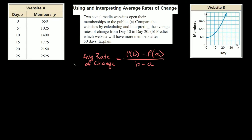What's up, you freaking geniuses? In this video I'm going to teach you how to compare functions using average rates of change. So let's go over this word problem right here. It says two social media websites open their memberships to the public. I have the information for website A over here and the info in this graph for website B over here. Part A says compare the websites by calculating and interpreting the average rates of change from day 10 to day 20.